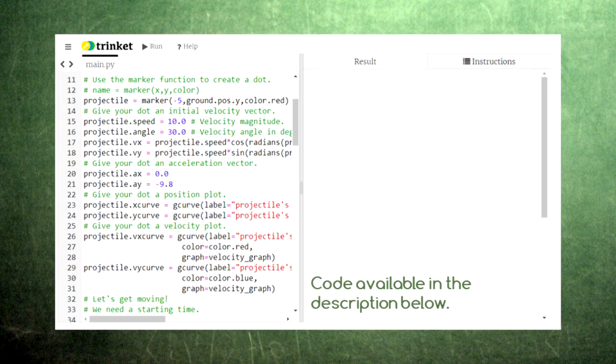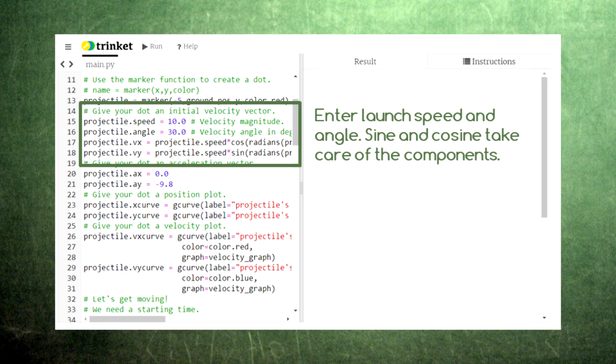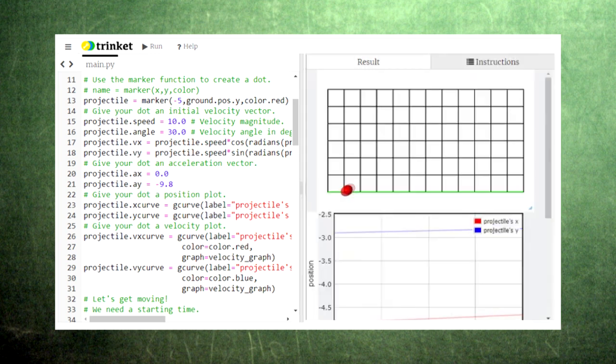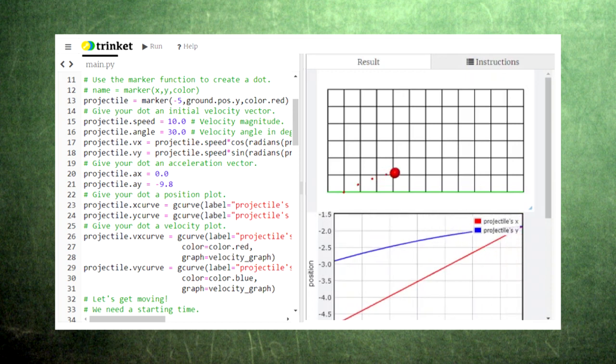To give our marker its initial velocity, we can now enter the launch speed and launch angle and then use the cosine and sine functions to obtain the x and y components. Our acceleration vector will have zero x component and a y component of negative 9.8. When we run the code, we see the projectile's trajectory form a parabola.